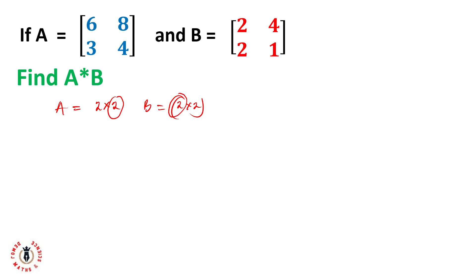What if it's a 3x3 matrix multiplying a 2x2 matrix? If matrix X is a 3x3 matrix multiplying matrix Y, which is a 2x2 matrix, obviously this multiplication will not work. Why? Because the number of columns in matrix X is not the same as the number of rows.